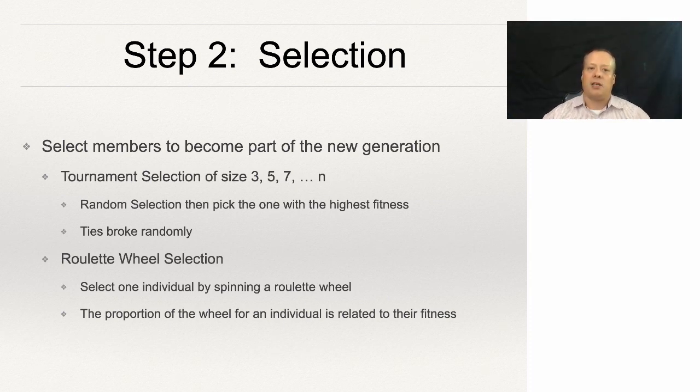One is tournament selection, where we set a tournament of size three, five, or seven, and we just randomly choose across all individuals for the tournament. Then we move the one into the next generation that has the highest fitness.